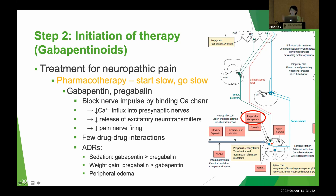Gabapentin — even though it has 'GABA' in the name, its mechanism of action is as a calcium channel ligand. It binds to calcium channels and decreases calcium influx into the pre-synaptic nerves. Benefits include few drug-drug interactions. Adverse reactions include sedation, weight gain, and peripheral edema. When a patient is on this medication, monitor their weight, and avoid it in patients with heart failure.